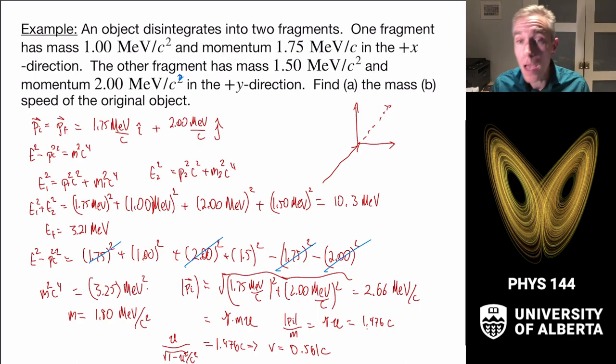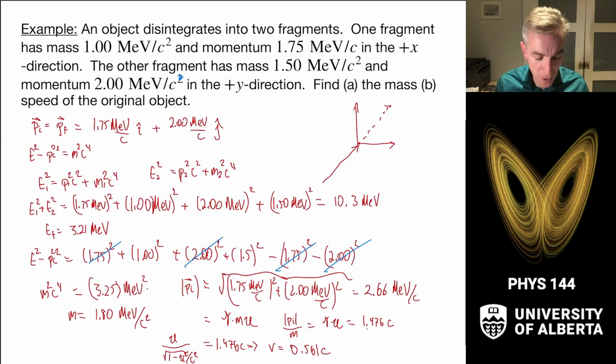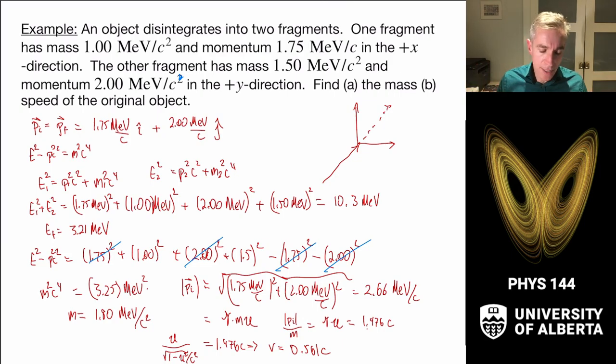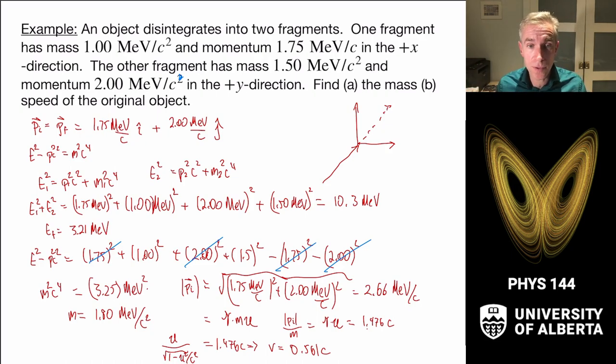So those are the tools we need: conserve momentum and energy separately, and remember that E² − p²c² always gives the invariant rest mass times c⁴. This brings us to the end of relativistic dynamics and indeed to the end of the videos for this course. We've seen the grand sweep of Newtonian mechanics all the way into modern physics applied in particle accelerators. Thanks for coming along on the ride, and I'll see you all later.